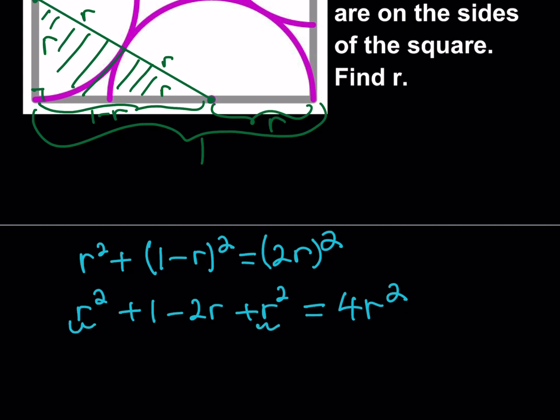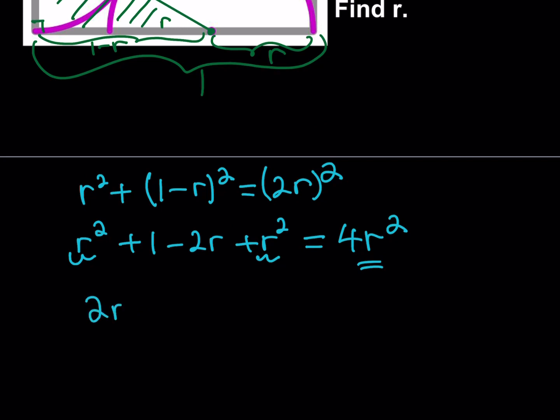Notice that these two will make 2r² subtracted from 4r² you should be getting 2r² on the right hand side, add 2r to both sides you should be getting positive 2r and then finally subtract 1 and you should be getting this quadratic equation.